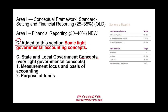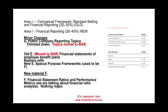Looking at other changes in area one: section D on public company reporting topics was trimmed down and some topics moved to BAR. The old section E on financial statement employee benefit plans has moved to BAR. There's a new section E called special purpose framework, and a new section F on financial statement ratios. Overall, nothing really major — they trimmed out the conceptual framework and standard setting and added some minor governmental accounting topics and ratios.